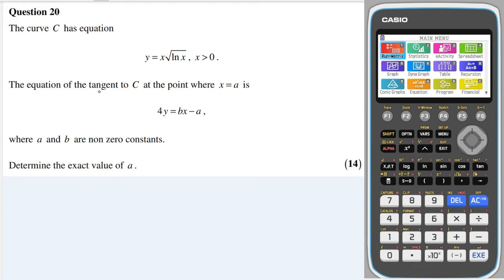And it says the equation of the tangent to C at the point where x equals a is 4y = bx - a, where a and b are non-zero constants, determine the exact value of a.